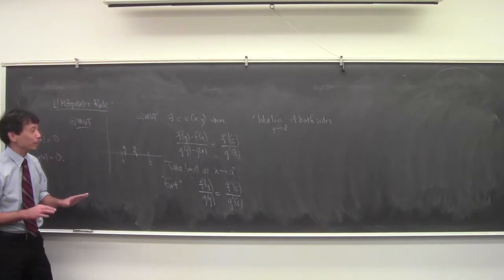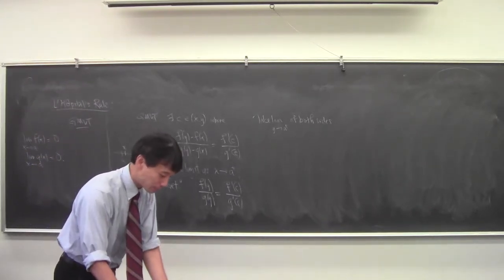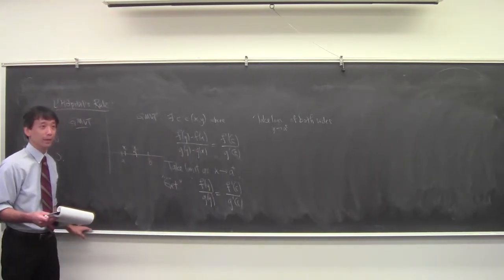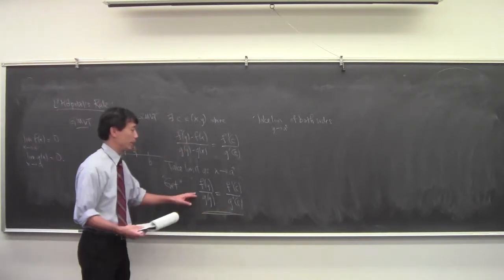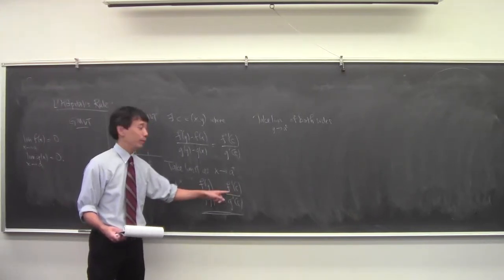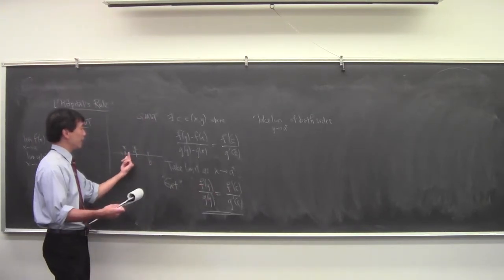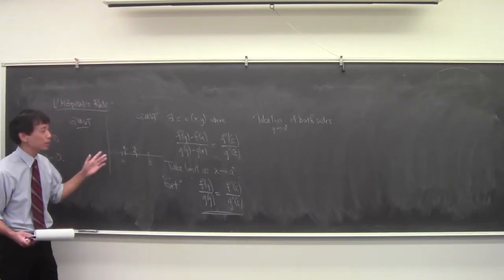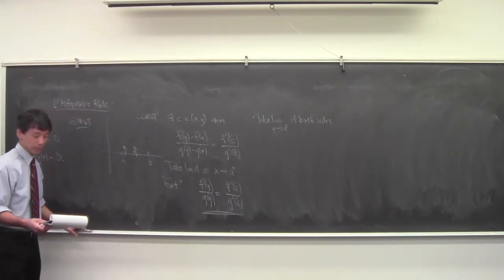In response to a question about 'both sides': you take the limit as Y goes to A on both sides of the equation, because C actually depends on Y. As Y is moving inward, C is trapped between A and Y, so you get the limit of the quotient of the functions equaling the limit of the quotient of the derivatives.